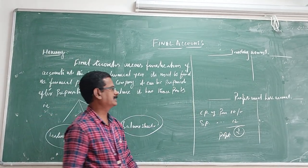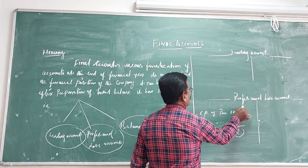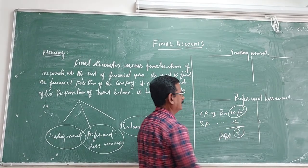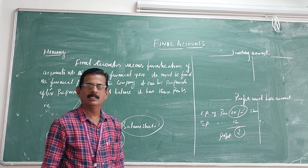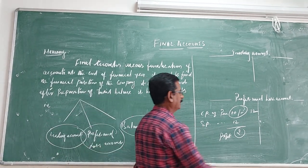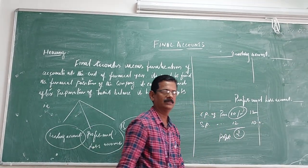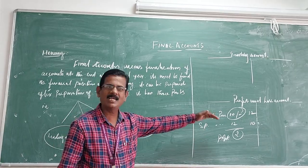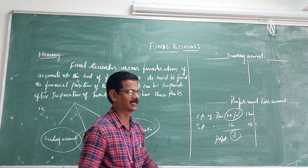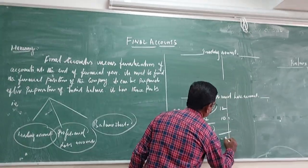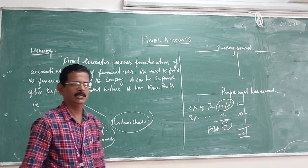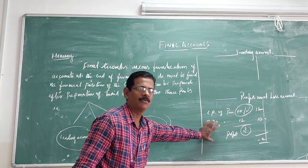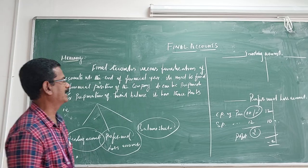In other ways, if the cost price of the pen is 12 and the selling price of the pen is 10, so here the sales price is less than the cost price. That is loss.